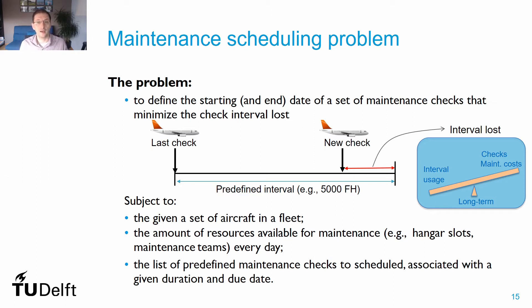We have to define the starting date of each check in order to respect their intervals. As we have seen in the previous lecture, these check intervals are defined according to the intervals of the most restrictive tasks within the check. The goal is to minimize maintenance costs in the long term, and to do that we are going to exploit the maximum we can of the maintenance check intervals given to us.